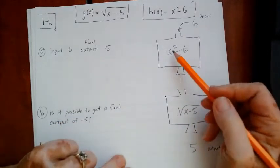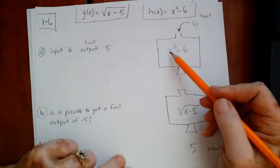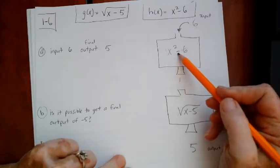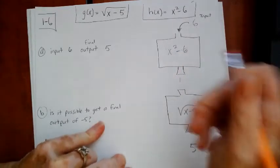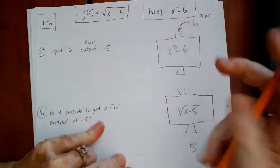So now I'm going to put my 6 into the top function. So 6 squared is 36. And it subtracts 6. 36 minus 6. That would give me 30.